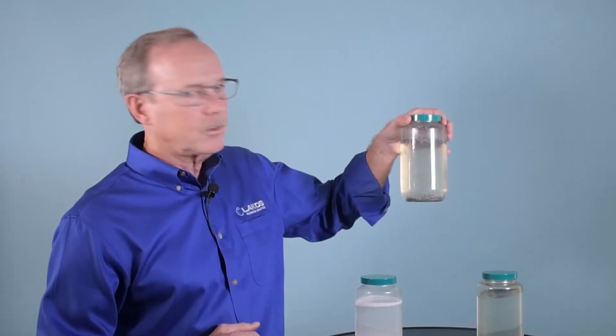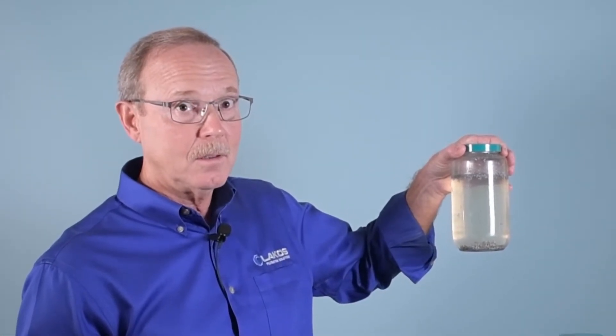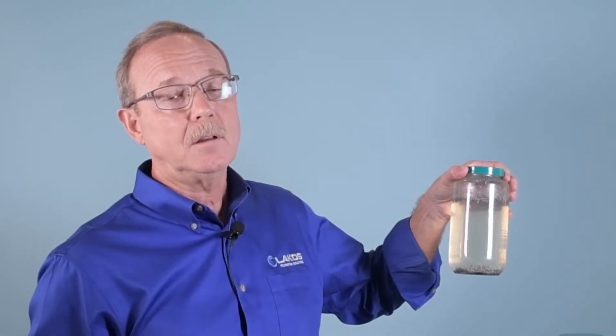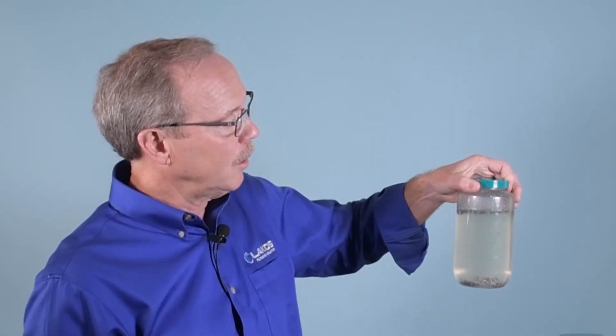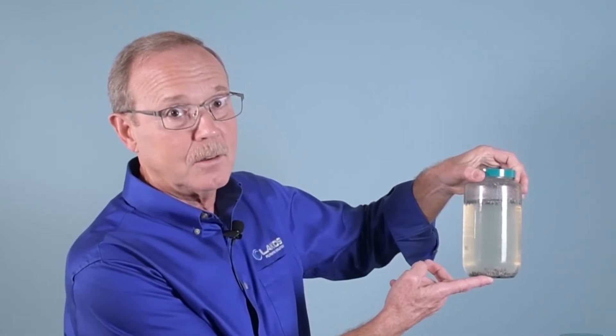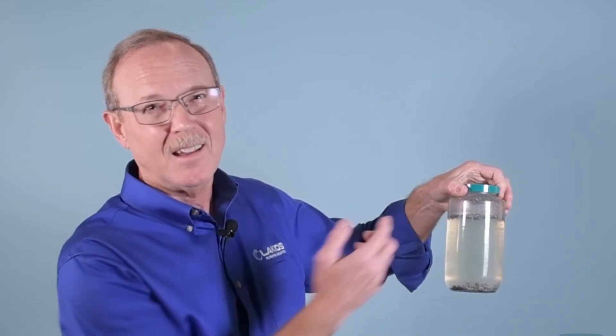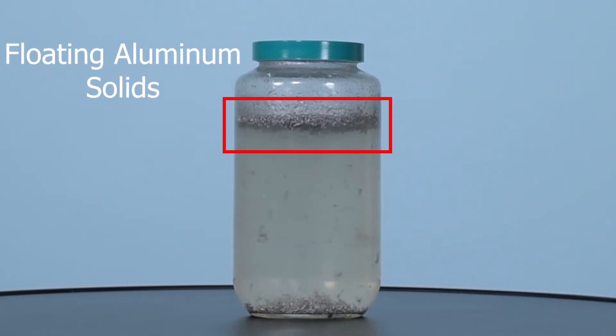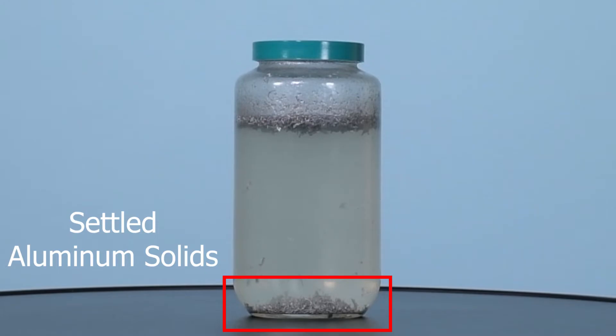The second one, these are the aluminum fines from the machining process for the engine plant in Canada. You see lots of settled material and you actually see some floating. How does aluminum float? Well, in this case, these are little curly cues from a machining process, and so there's air trapped in some of these small particles and they tend to float. Most of the stuff's going to settle out.